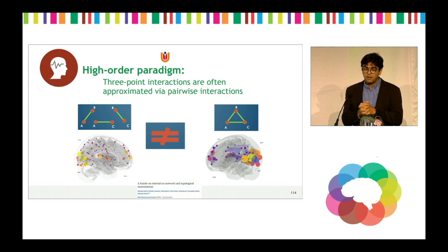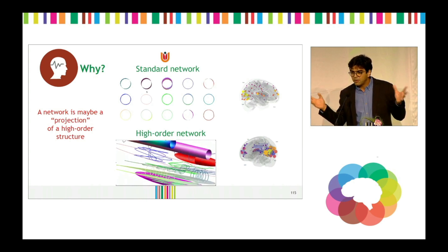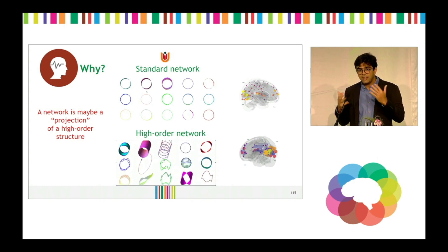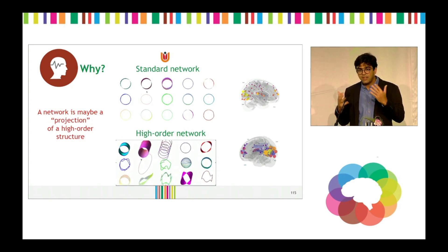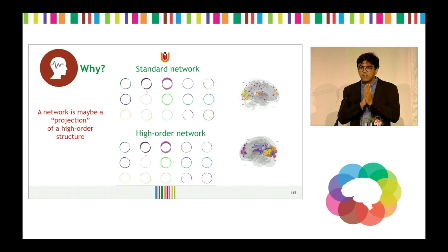The idea is to build a pipeline that could infer communication in the brain across multiple areas simultaneously. As an example, in a standard network visualization you only see circles, but in a higher-order view you will see lots of surfaces. So that's the idea we want to bring: if you have a higher-order network built upon higher-order interactions, you may see more than what a usual pairwise approach reveals.